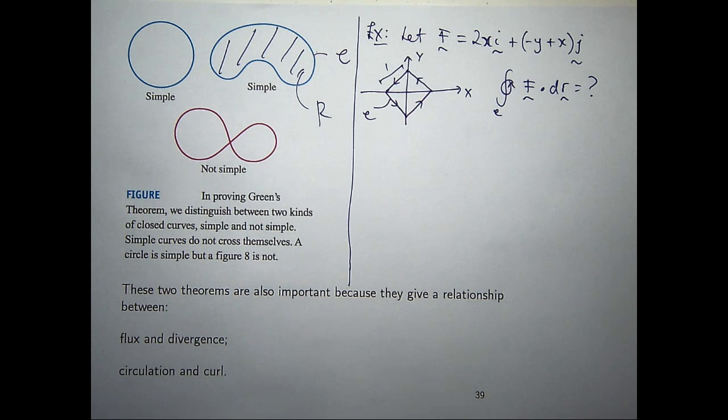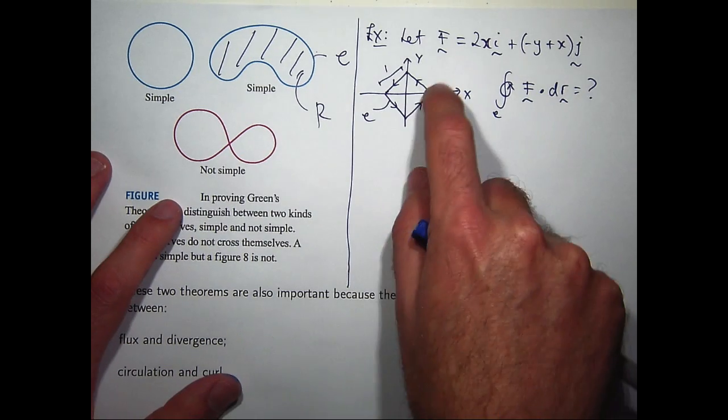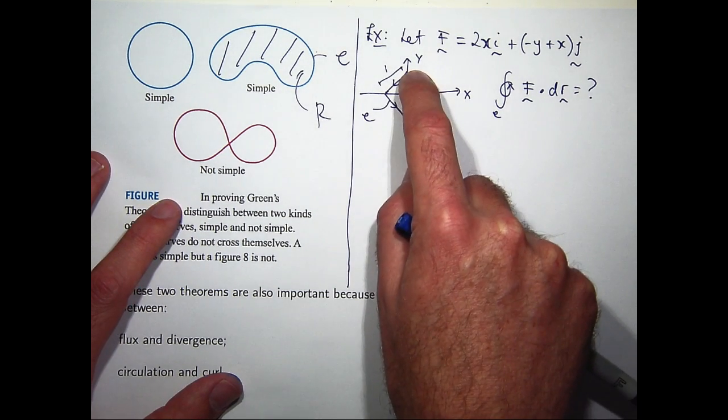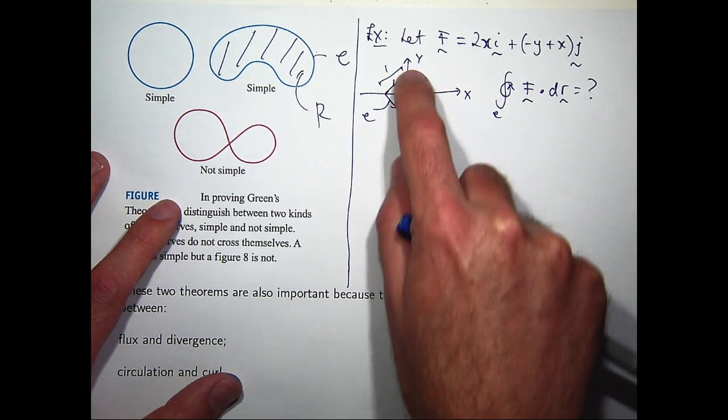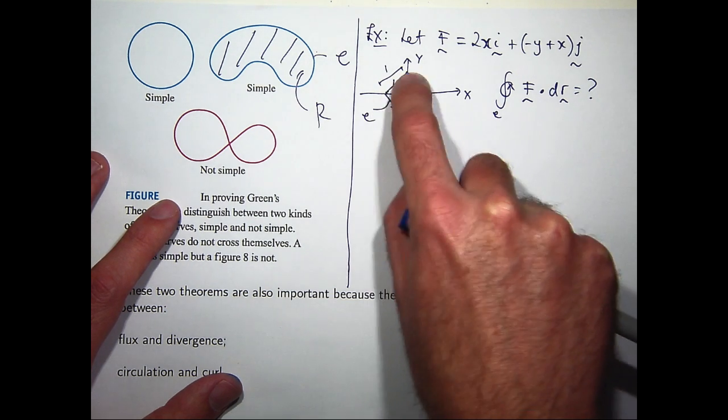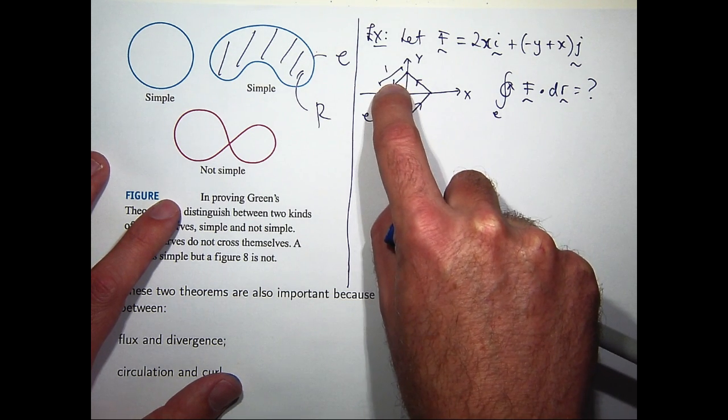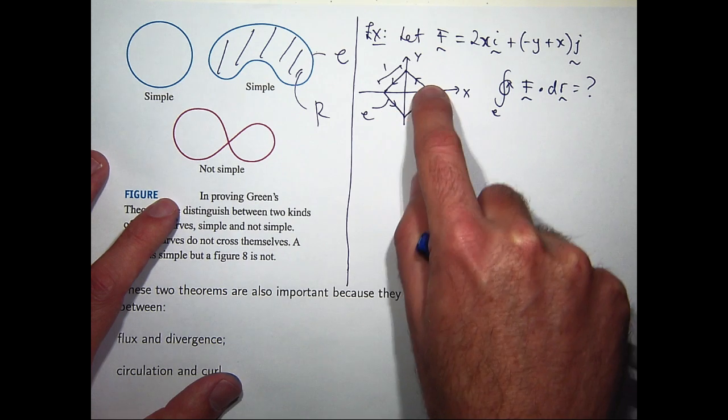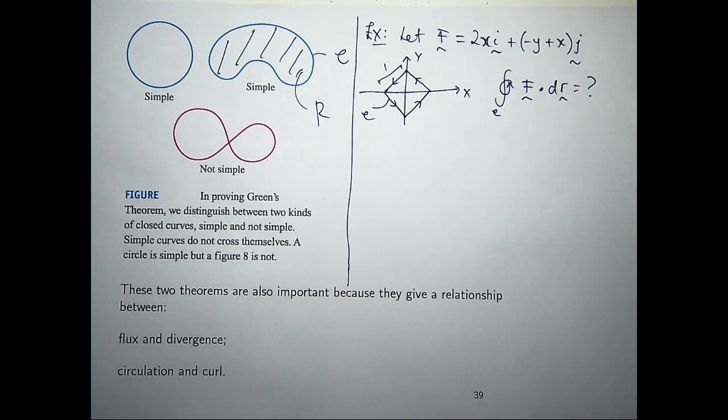Okay, how would you do that? Well, what you would do, is you would go to, say, this curve, and parametrize that. And work out that part of the line integral. Go to this curve, work out the parametrization for that, and work out the line integral. Then go there, and then go there. And then add up the four line integrals, or the four results. So this line integral is four line integrals. Who wants to do all that?